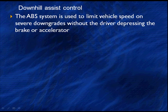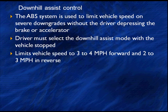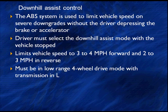Downhill assist. It can be used to limit vehicle speed on severe downgrades without the driver depressing the brake or the accelerator. The driver does have to select this mode with the vehicle stopped — it does not engage automatically. It limits speed to three to four miles per hour forward and two to three miles per hour in reverse. If you're in severe mountainous terrain off-roading and you select downhill assist control, it'll keep the car from going too fast. It must be in low-range four-wheel drive mode with the transmission in low — it's strictly for off-road use.